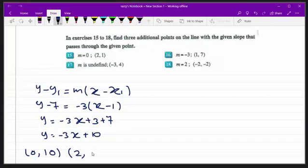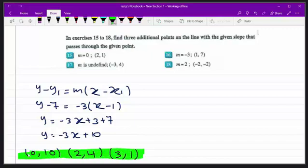If we put 3 in place of x, we will get negative 3 times 3 is negative 9, plus 10 is 1. We just got 3 more points for question 16.